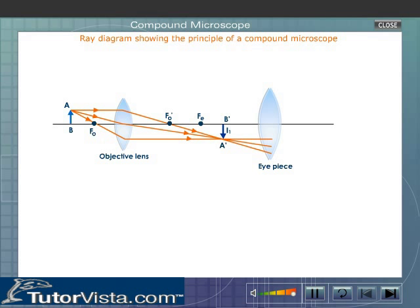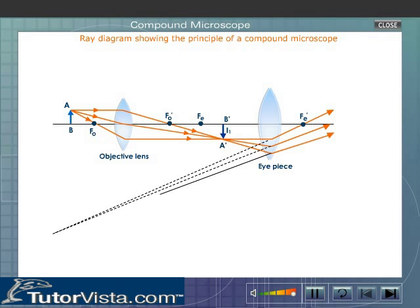The position of the eyepiece is adjusted so that the image lies within the focus of the eyepiece f_e. The eyepiece acts like a magnifying glass and forms a virtual, erect, and magnified image of the object.